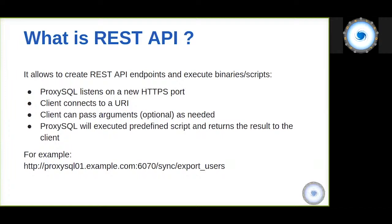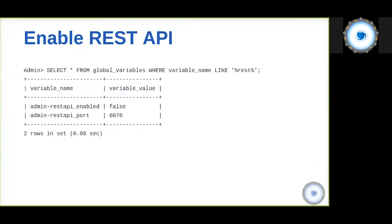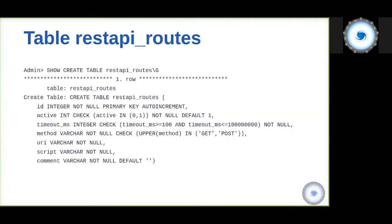The user can create scripts and load them into ProxySQL, and ProxySQL will execute them. To enable the REST API, you use the global variable admin-rest-api-enabled, which is false by default, so you must explicitly set it to true. The default port is 6070, which can also be configured.